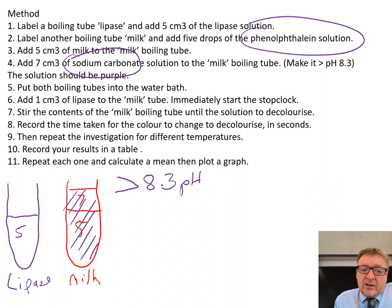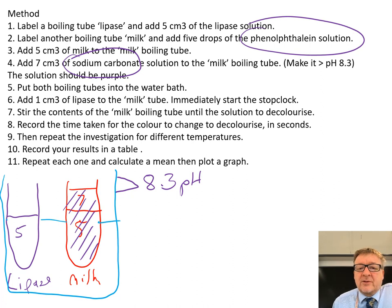You have lipase 5 cm³ and milk with sodium carbonate and phenolphthalein as a purple liquid. Put them both in a water bath and start at 40 degrees Celsius. Once they reach the right temperature at 40 degrees Celsius, take 1 cm³ of the lipase.